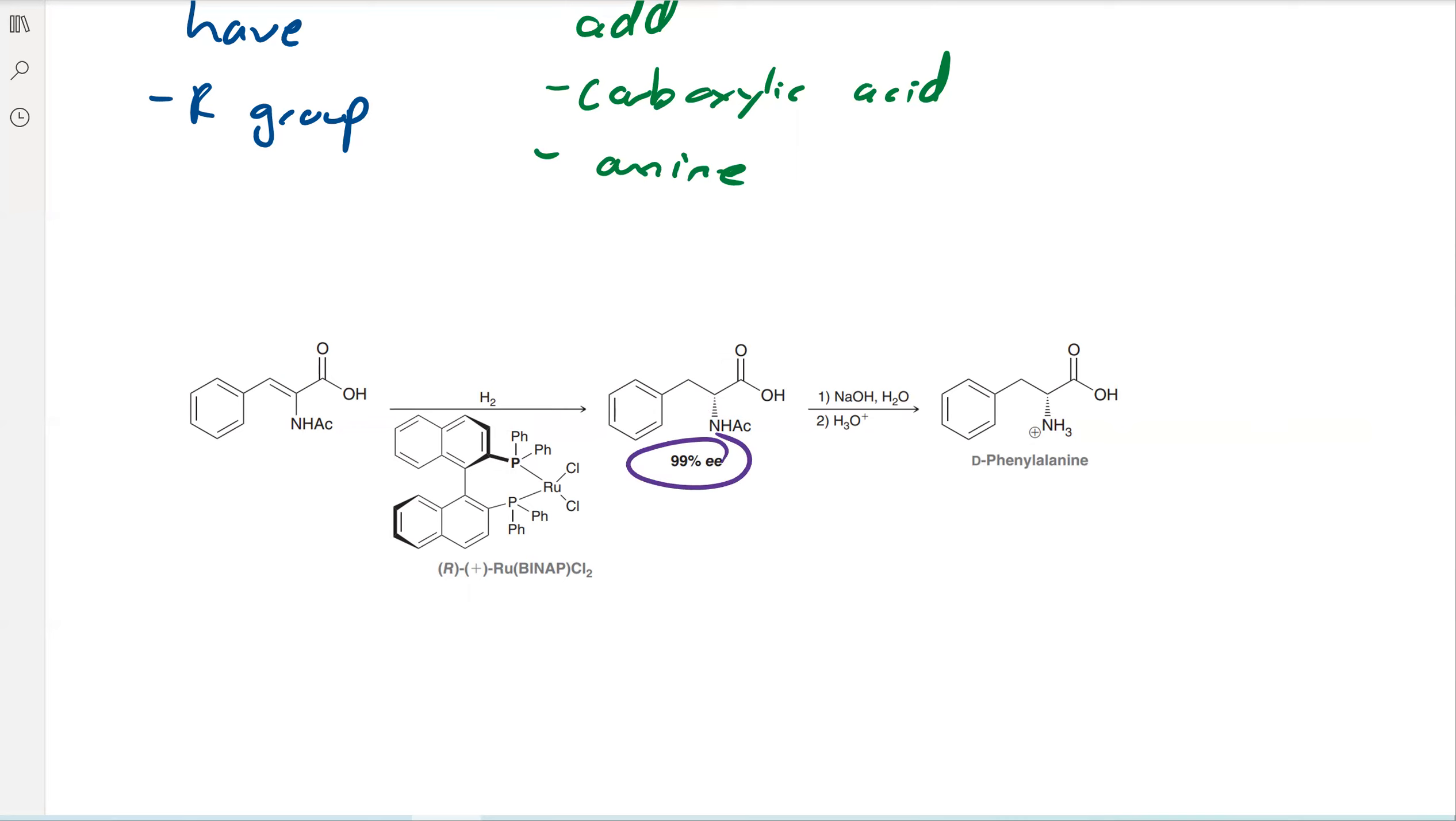And you can see 99% enantiomeric excess - go ahead and review the other chemistry so you can remind yourself what that means. Then you end up with your enantiomerically relatively pure amino acid. But again, that's beyond the scope of this course so we won't go into it any further than that.